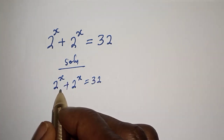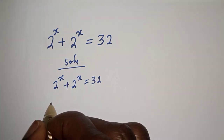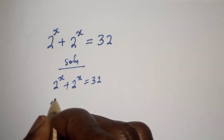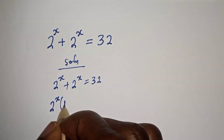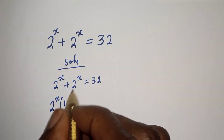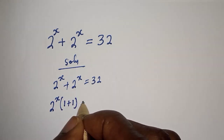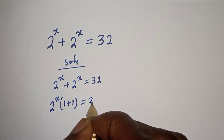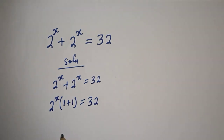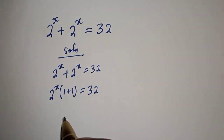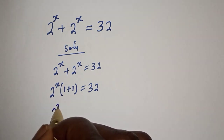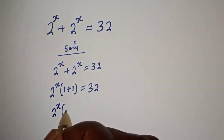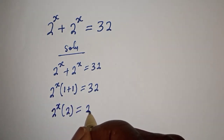From the left hand side, 2 raised to power s is common — let's bring it out. This gives 2 raised to power s, bracket 1 plus 1, which equals 32.